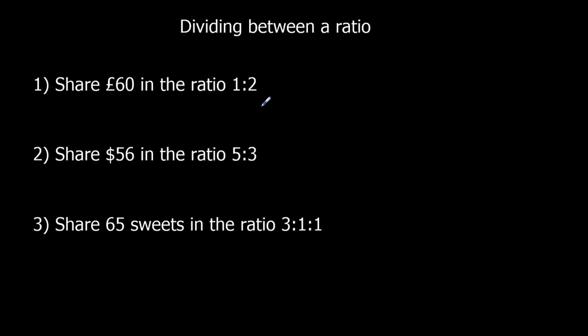Okay, first one we've got a ratio of 1 to 2. So that means 1 part to 2 parts. That's 3 in total. 3 parts. So 60 divided by 3, 20. So it's pounds in this case. 20 pounds is each part.